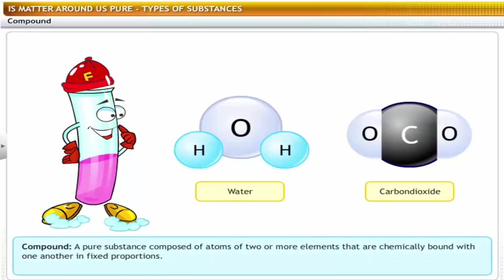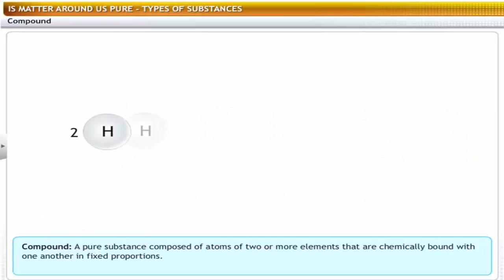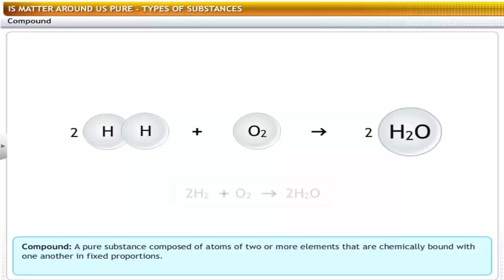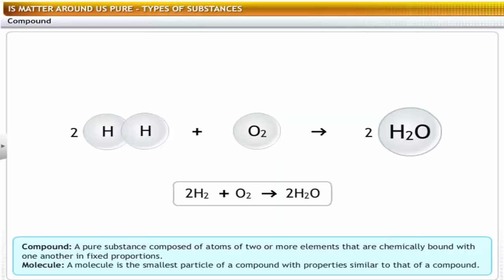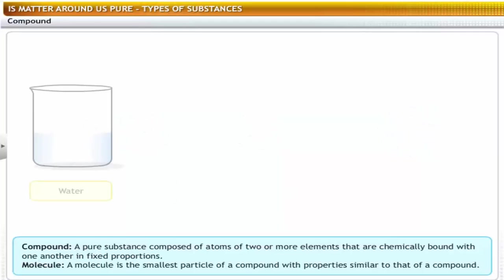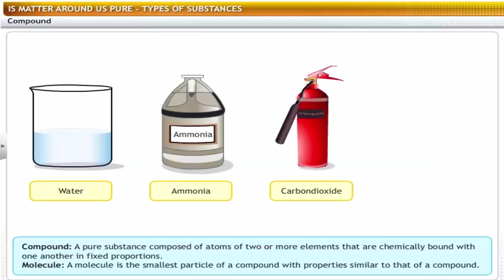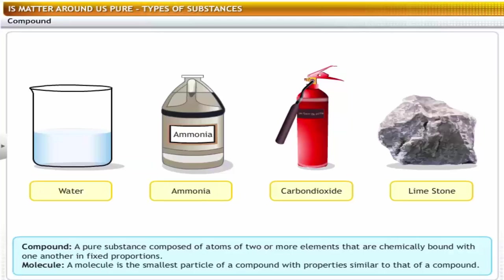A compound is a pure substance that is composed of two or more elements, chemically combined in definite proportion by weight. For example, water is made up of two atoms of hydrogen and one atom of oxygen. These atoms combine to form a compound known as water. The smallest particle of water is called a molecule — a molecule is the smallest particle of a compound that still has all the properties of a compound. Water, ammonia, carbon dioxide, and limestone are examples of compounds.